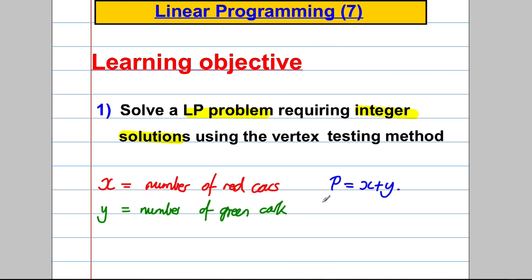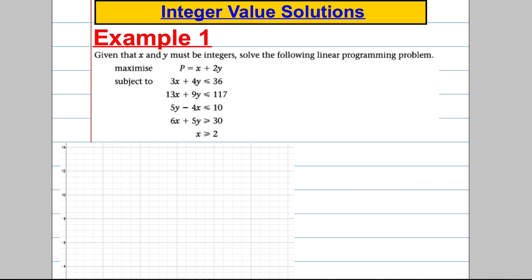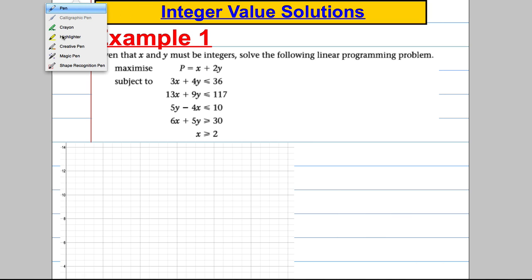For example, a weight could be decimalised, but if you were counting how many jugs you could make then that would need to be an integer. So you've just got to look for that in the question. Let's deal with a typical example that's already laid out as a linear programming problem and solve it for integer values.